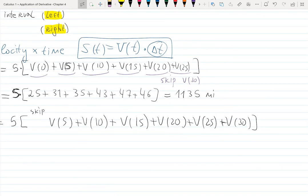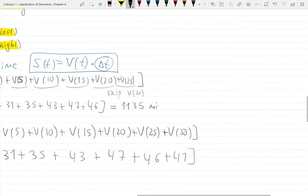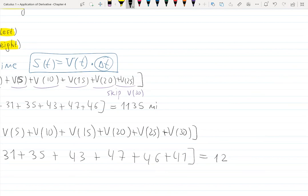So I skipped v(0) because we use only right endpoints. I'm using the table—keep looking at the table. I'm skipping 25, so I'll have five factored out, and then I start with 31 + 35 + 43 + 47 + 46 + 41 at the end. That gives me the approximation: 1,215 miles. So that's the approximate distance this motorcycle traveled with the given data.